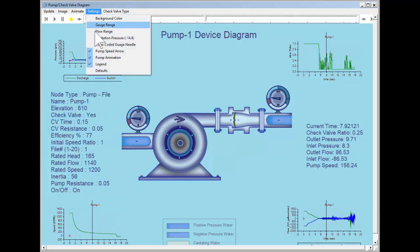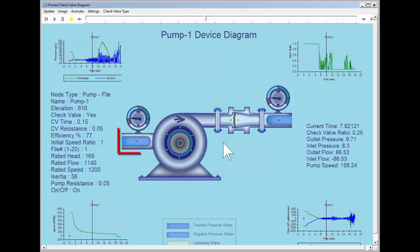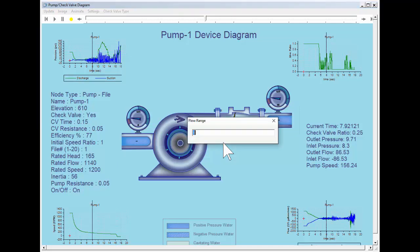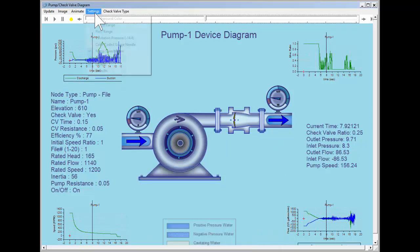We can change the range of the flow vector arrows that are displayed in the inlet and outlet pipes. We can change the cavitation pressure.